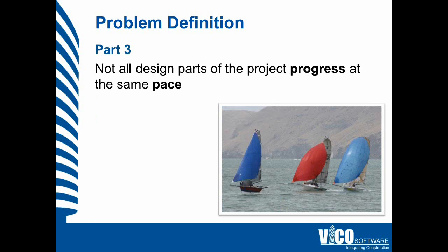Some parts of a project are tougher to model than others, and some teams work faster than other teams. That means some systems in the project will finish developing earlier than others. That is no problem at all, as long as you understand up front at which point in time a certain level of development or detail is going to be achieved by each of the involved parties.